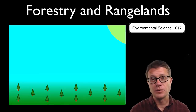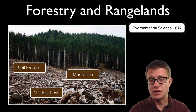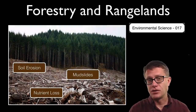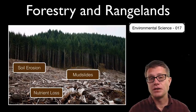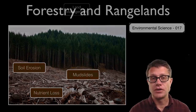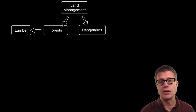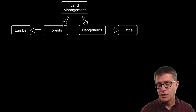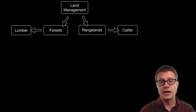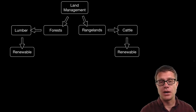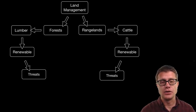There are some problems with clear cutting. In certain areas it promotes soil erosion which could lead to mudslides, it decreases nutrients in that area, and it decreases biodiversity as well. I am talking about land management of forests to provide lumber, but I am also going to talk about land management of rangelands through grazing to produce things like cattle. Both of these resources are renewable — if we do a good job they will keep coming back — but there are threats to that renewability.